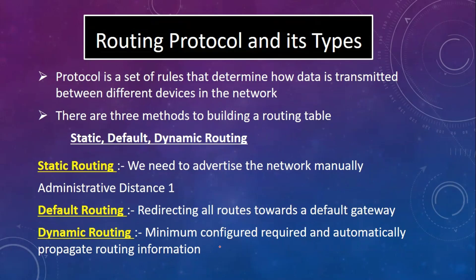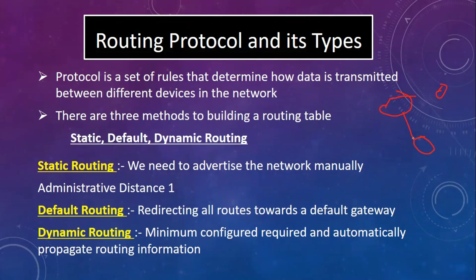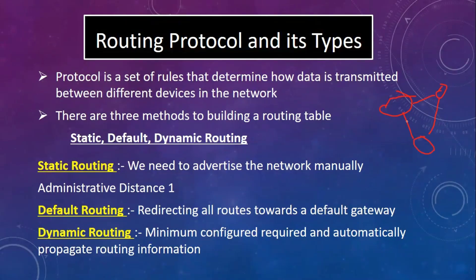Dynamic Routing Protocol requires minimum configuration and automatically propagates routing information. Routes are advertised — the routing table is updated with neighbors' information. With static routes, we must configure each manually. But with dynamic routing, routes are propagated automatically to each device. Full mesh topology is manageable with dynamic routing, which is not needed with static routes.